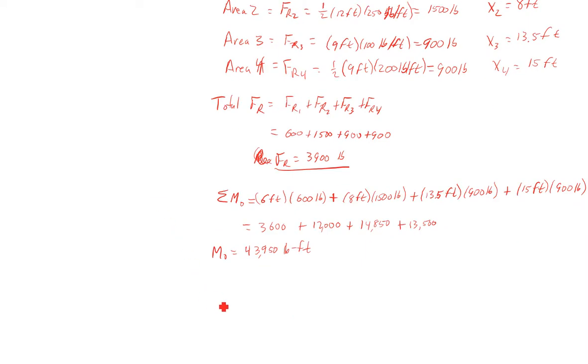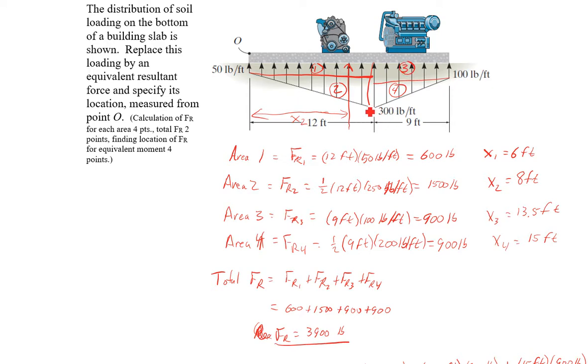And my X bar equals M over FR. X bar equals 43,950 pound-foot over my 3,900 pounds. So X bar equals 11.27 feet or, to three significant figures, 11.3 feet. So my resultant force would be acting right here. There's FR. And that would be 11.3 feet from point O.